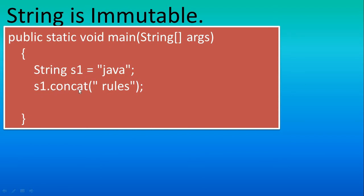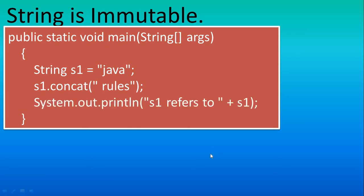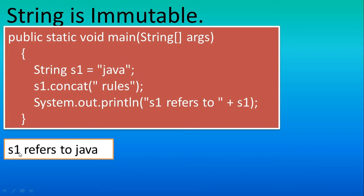Suppose you use the concatenate method to change this string object's value. If you write s1.concatenate with 'rules', the value would be 'Java rules', because the concatenate method is used to add strings to the original string value. So according to general observation, the output should be 'Java rules', and if you use an output statement like that, you'd expect s1 to refer to 'Java rules'.